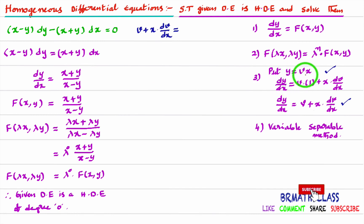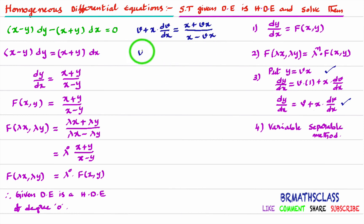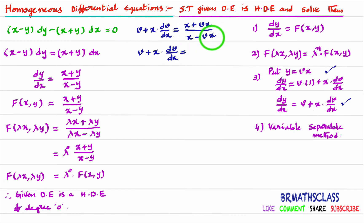In place of dy/dx, we write v + x·(dv/dx). x remains the same, and in place of y we write vx, both in the numerator and denominator. We get v + x·(dv/dx) = (x + vx) / (x - vx). Taking x common in numerator and denominator, they cancel, leaving (1 + v) / (1 - v).